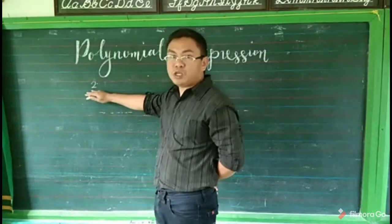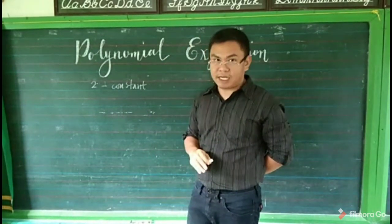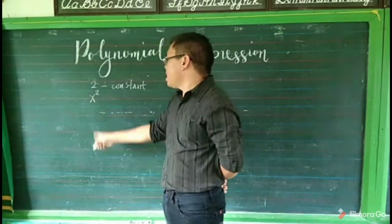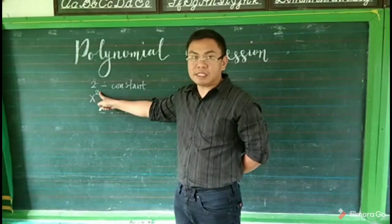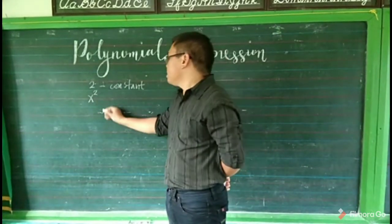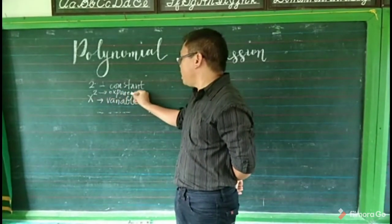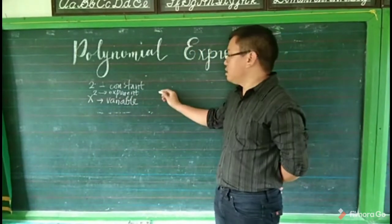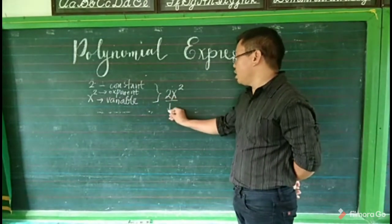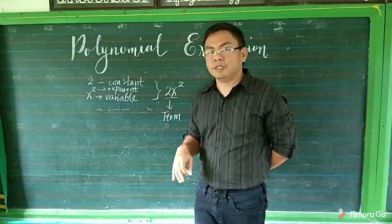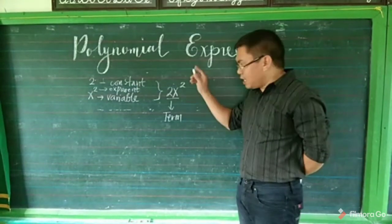For example, 2 is a number, so we call this a constant — a number without any letter beside it. If you have x squared, the letter x is what we call a variable, and the 2 on the upper right side of x is what we call an exponent. When these are combined to form 2x squared, you are actually forming what we call a term.